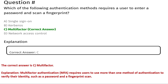Multi-factor authentication (MFA) requires users to use more than one method of authentication to verify their identity, such as a password and a fingerprint scan. That's why the correct answer is C, multi-factor.